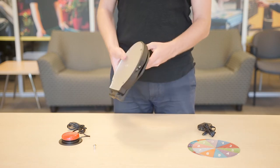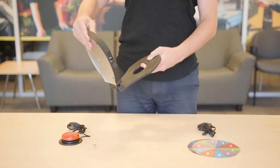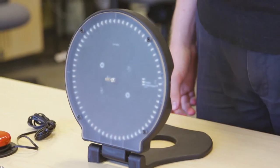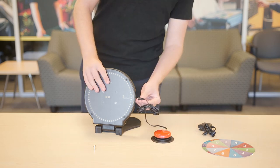To get started, unfold the spinner's stand and set it at the desired angle. Now connect the accessibility switch to the spinner.